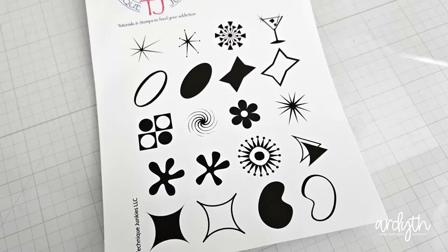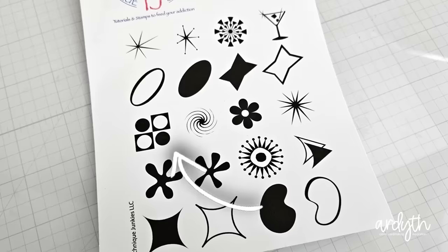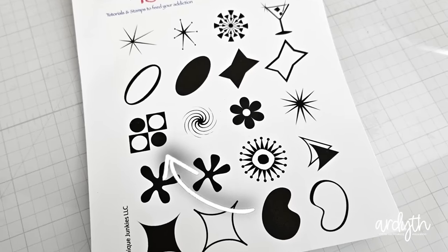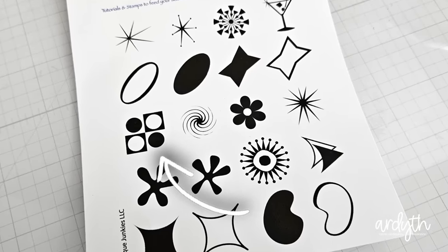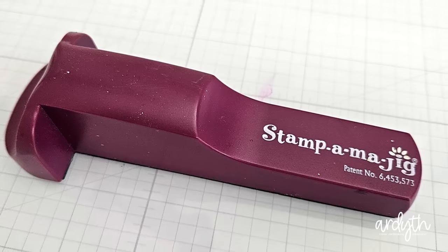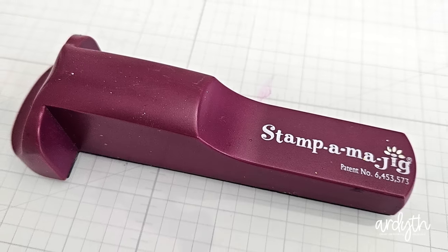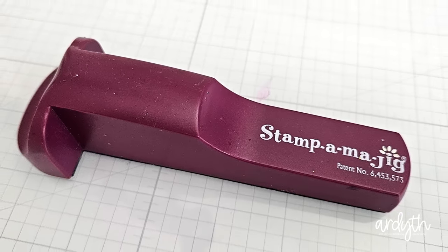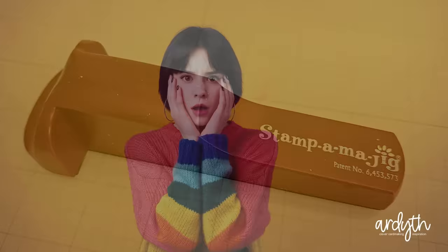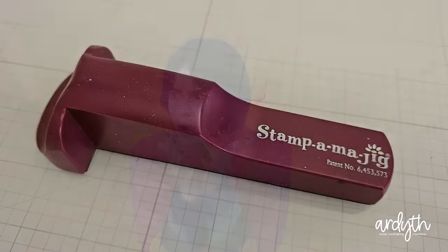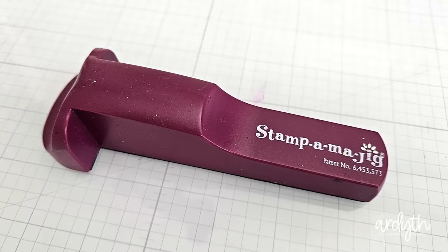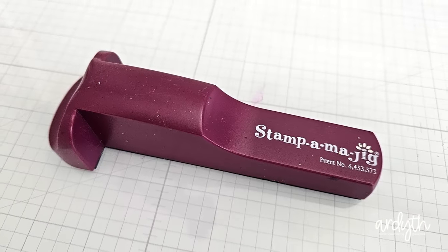For my next card, I used another stamp from the 60s set. This one's geometric, and it's just screaming out to be made a full background. Because of the geometry, I want some precision in my placement, so I pulled out this very old-school tool, a stamp-a-ma-jig. Kids, this is what we did pre-MISTI. It is a good tool, but it's easier to make errors with this one than with a MISTI, so it's not super popular anymore.